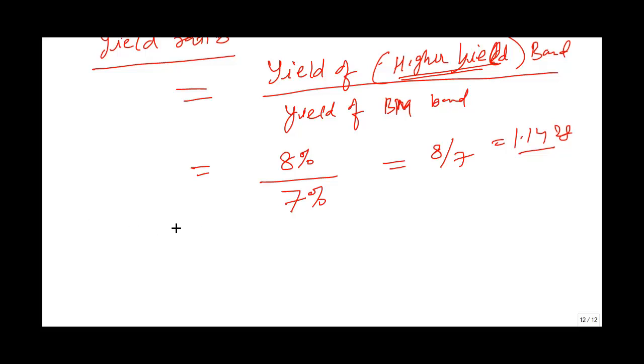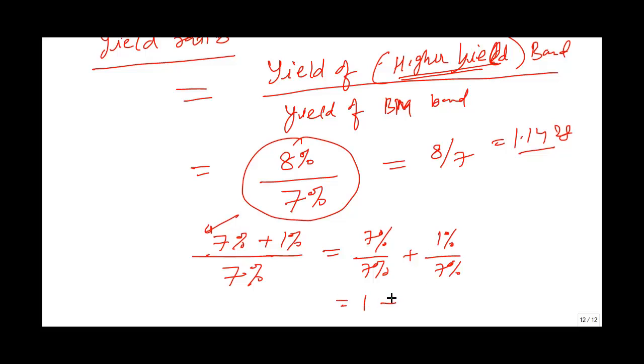This 8 by 7 can be written as 7% plus 1%. Then we can write it as 7% divided by 7% plus 1% divided by 7%. This simplifies to 1 plus 1% over 7%. Note that this 1% is the absolute yield spread.